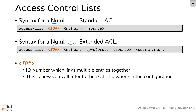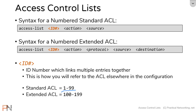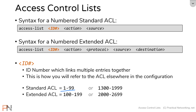In a numbered access list, the ID number must be a number, and the number you choose is very significant. If you choose numbers 1 through 99, you're configuring a standard access list. If you choose numbers 100 through 199, you're configuring an extended access list. There's also an additional set of ID numbers: 1300 through 1999 for standard, and 2000 through 2699 for numbered extended access lists.